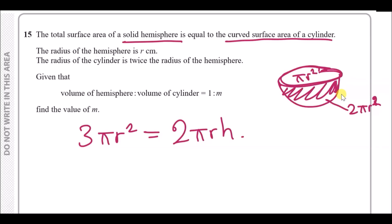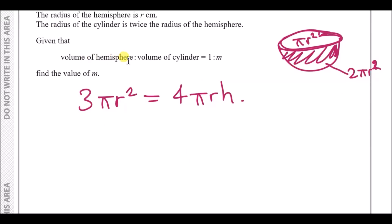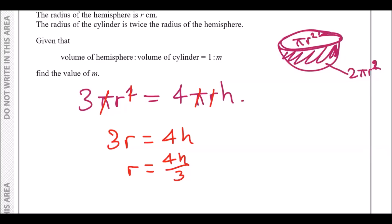The radius of the hemisphere is r, and the radius of the cylinder is twice that, so 2r. Substituting into the cylinder's curved surface area gives 2π(2r)h = 4πrh. So the equation becomes 3πr² = 4πrh. Cancelling π from both sides and one factor of r gives 3r = 4h, so r = 4h/3. This is the relationship between r and h.